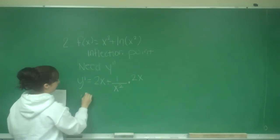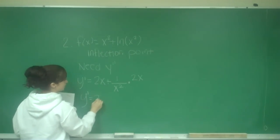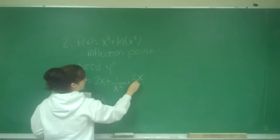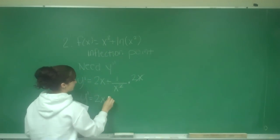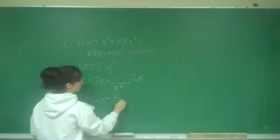We simplify that. y prime is 2x—my x cancels with one of these x's—plus 2 over x.